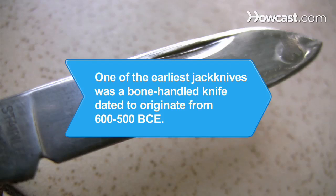Did you know? One of the earliest pocket knives, or jackknives, found was a bone-handled knife at Polstadt dating to around 600 to 500 BCE.